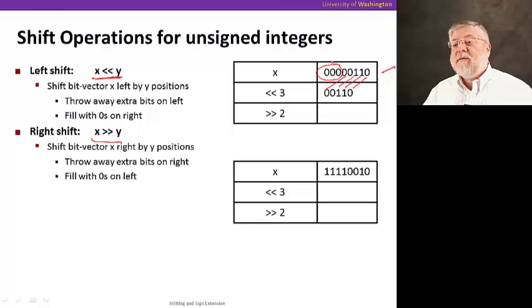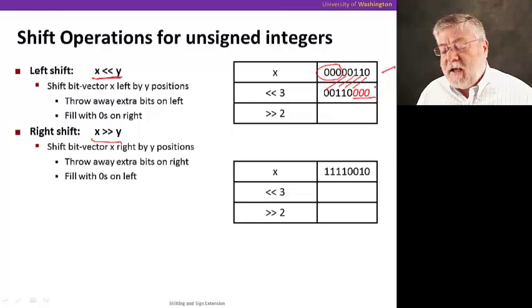You'll notice that the high order 3 bits, the most significant bits, we're going to kind of lose. They're just going to drop off the end. And we're going to have a hole left over on the right of 3 bits that we need to fill, and we're just going to fill that with 0s.